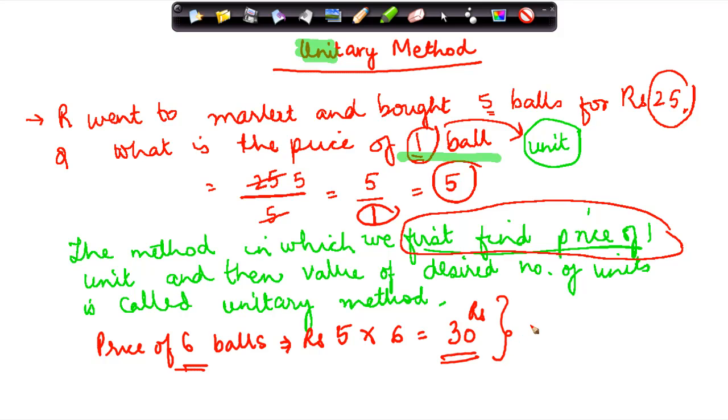And this is what is called the unitary method. So you would do it in two steps: first you find out the price of one unit and once you are done with that then you can find out the price of any number of units by multiplying the price of one unit by the desired number of units.